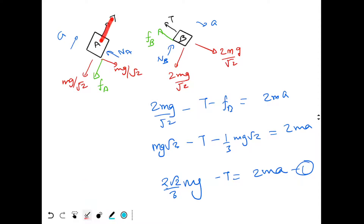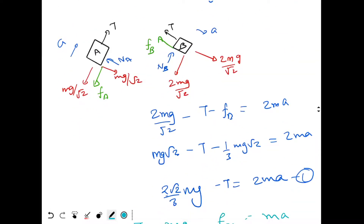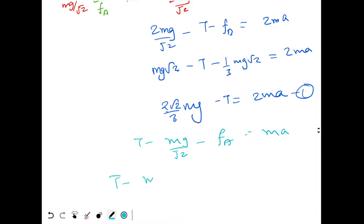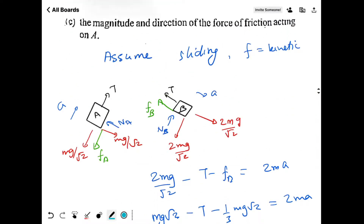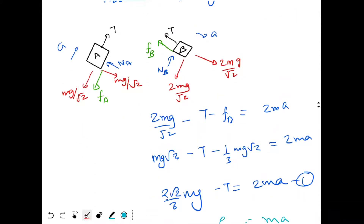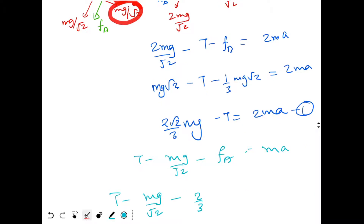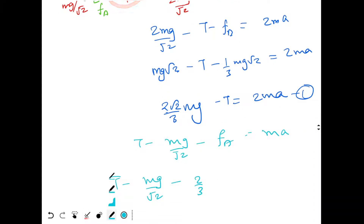For block A: tension acts upward, mg/√2 acts downward along the incline, and friction fA acts downward. So T − mg/√2 − fA = ma. Block A has mass m. fA = μa × Na = (2/3) × (mg/√2). So: T − mg/√2 − (2/3)(mg/√2) = ma.